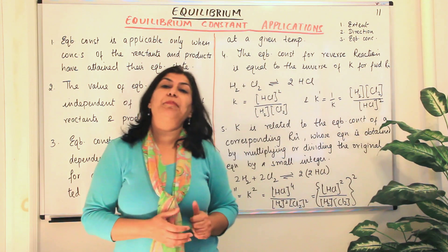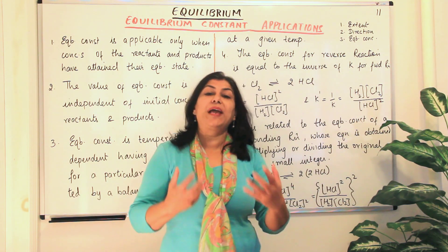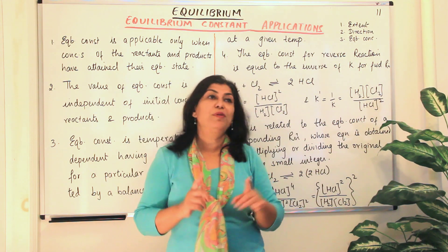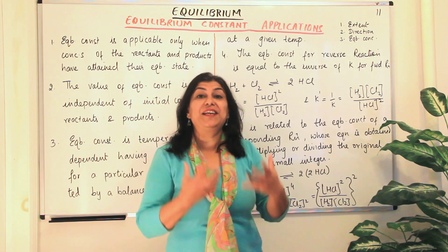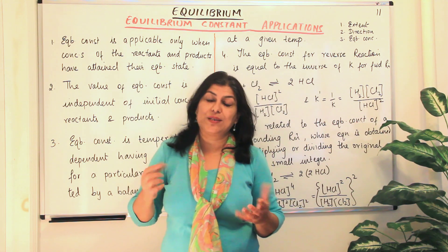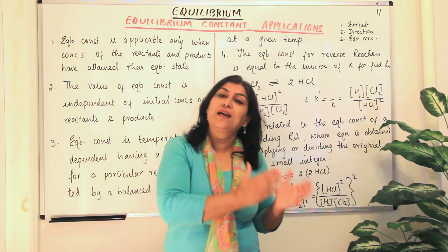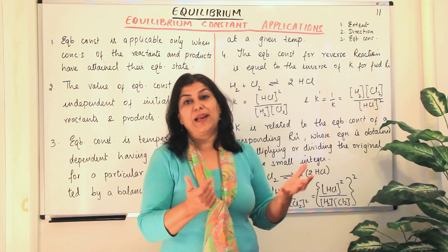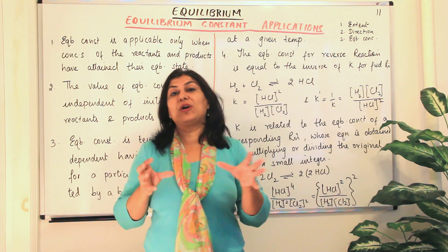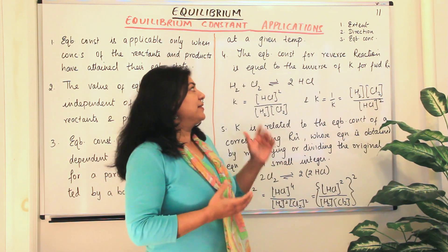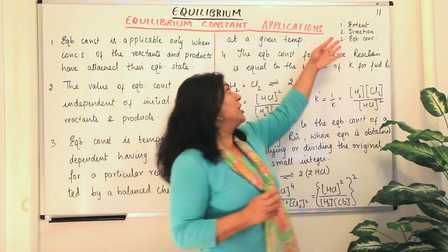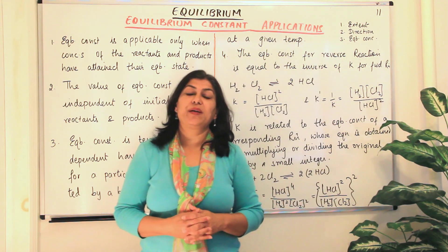The third application of equilibrium constant is that we use it to calculate equilibrium concentrations. In the past three or four videos on numerical problems, we have already been doing this — calculating equilibrium concentrations when initial concentrations are given, using the variable x, making a quadratic equation, solving for x, and then using those values to get the concentrations at equilibrium. In the next three or four consecutive videos, I'm going to explain these applications one by one and solve numerical problems on each.